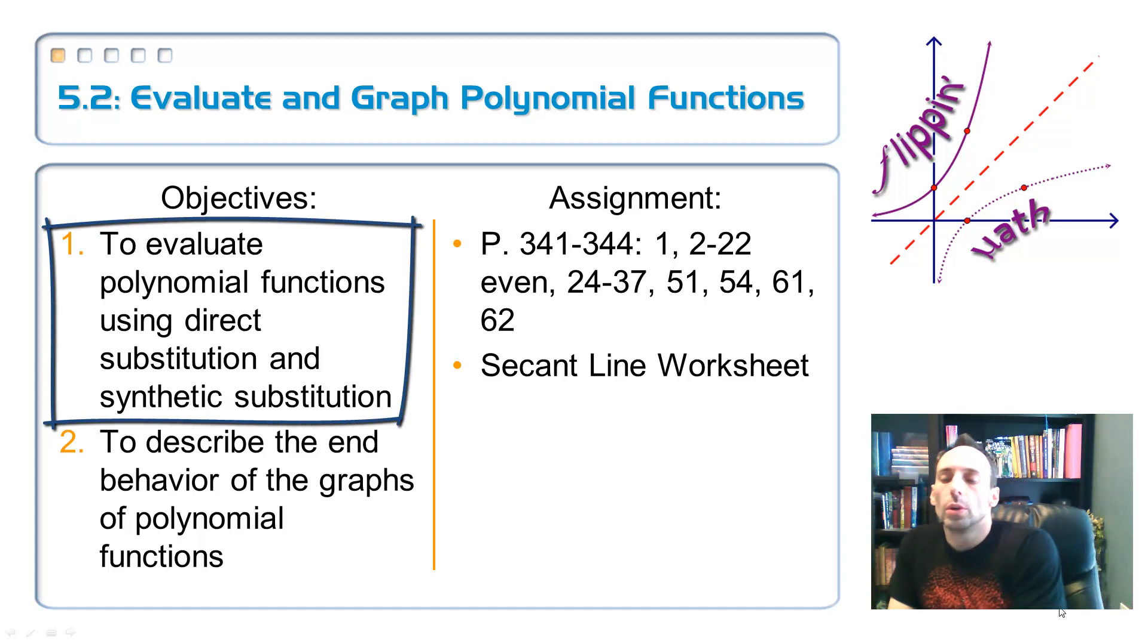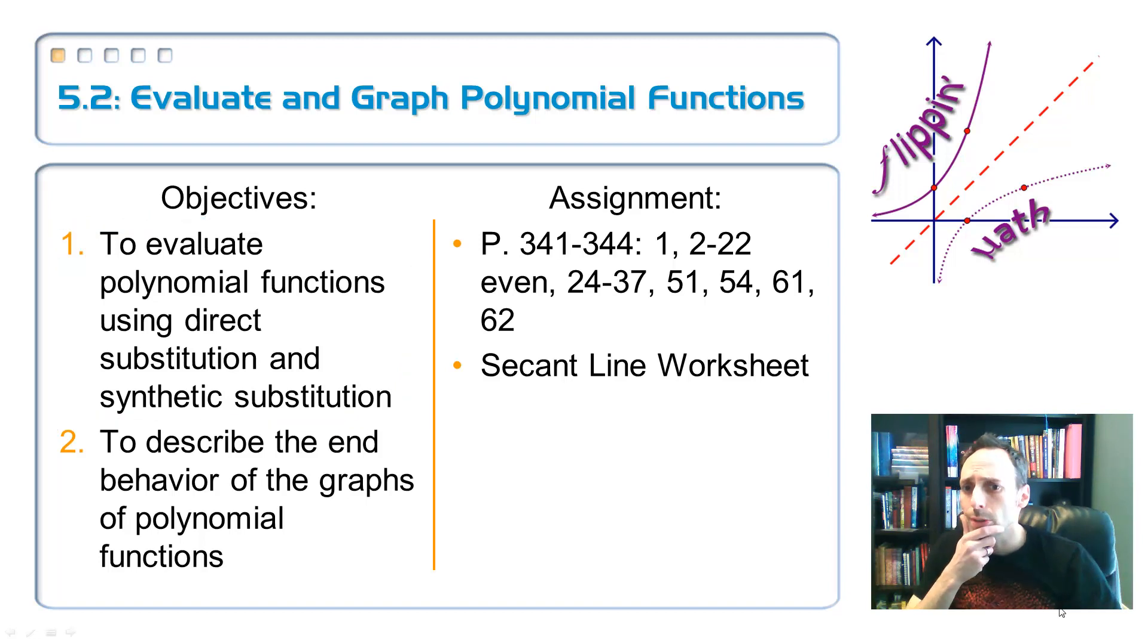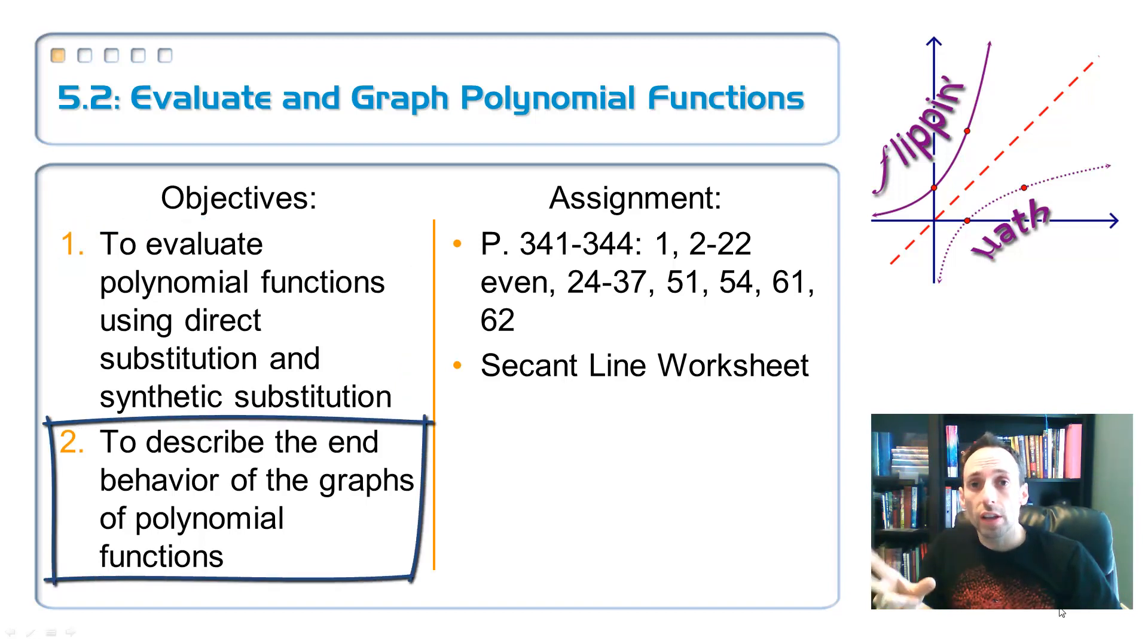Objective one, we're going to be able to evaluate polynomials using some direct substitution. Very easy, just plug a number in. And then something called synthetic substitution, sounds vaguely familiar. And then our second objective is to describe the end behavior of the graphs of polynomials. That's where the graph part of the title comes in. Just what are the ends of our graphs looking like?